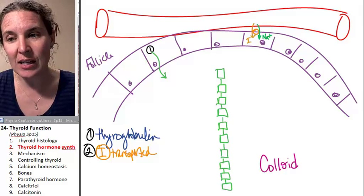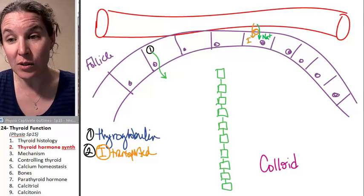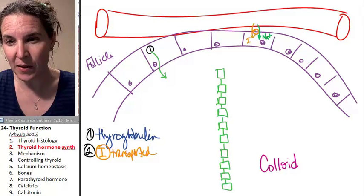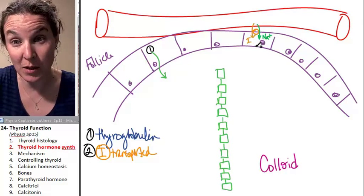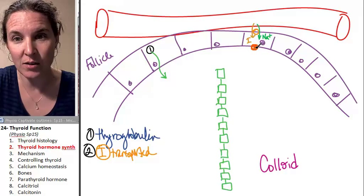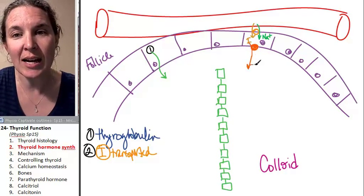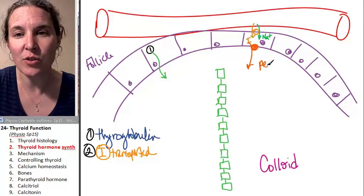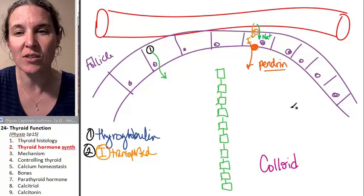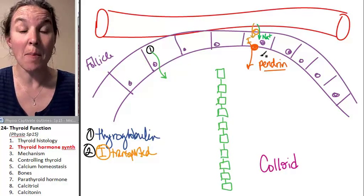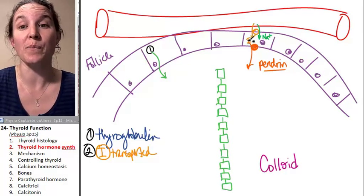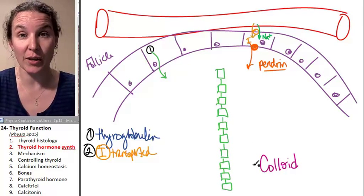Now on the luminal edge, because this would be the luminal edge of the follicle cell, there's another guy that transports iodine in, and this guy's name is Pendrin. And I'm telling you this because I think there's clinical significance to a malfunctioning Pendrin because you can't get your iodine into the colloid.